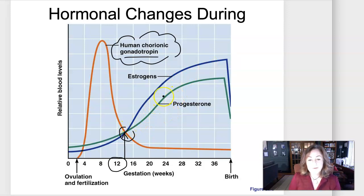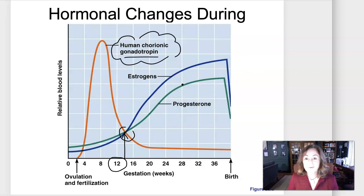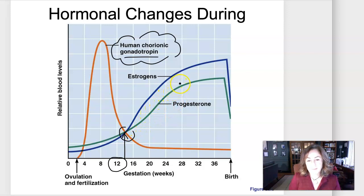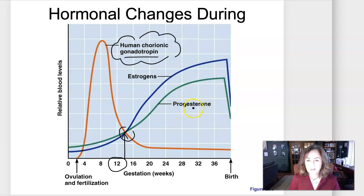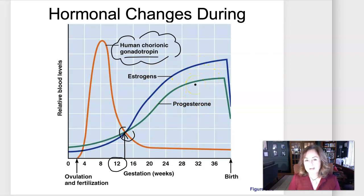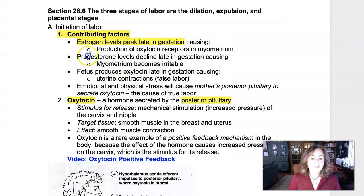Progesterone keeps the endometrium very quiet and happy — that's what it does in a non-pregnant state too. When progesterone levels are high, the endometrium is vascular and glandular. Because the placenta is secreting progesterone, it keeps the endometrium happy. But late in gestation, progesterone levels more or less become steady or can even decline. This relative decrease in progesterone felt at the end of pregnancy will make the endometrium more irritable. So oxytocin receptors are forming in the myometrium, and progesterone tapering off makes the endometrium more irritable.